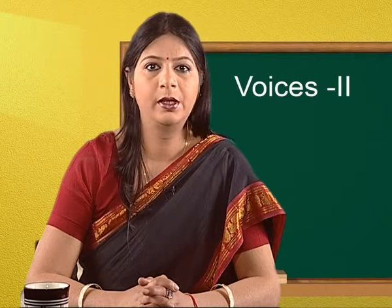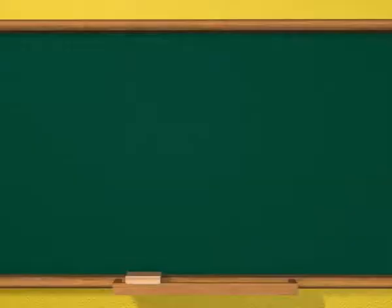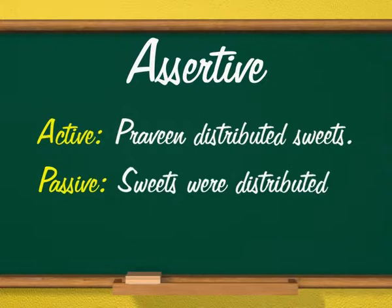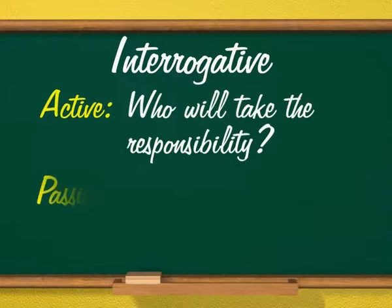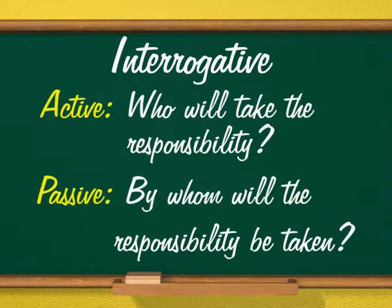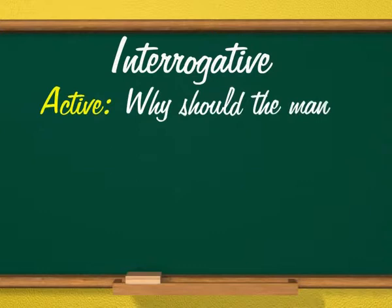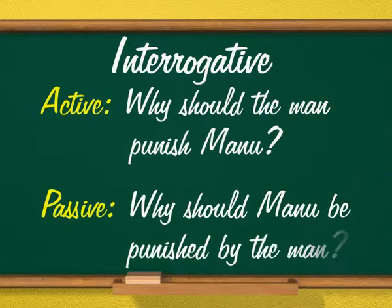Let us try out a few transformations from one voice to another. Assertive, active: 'Praveen distributed sweets.' Passive: 'Sweets were distributed by Praveen.' Interrogative, active: 'Who will take the responsibility?' Passive: 'By whom will the responsibility be taken?' Active: 'Why should the man punish Manu?' Passive: 'Why should Manu be punished by the man?'